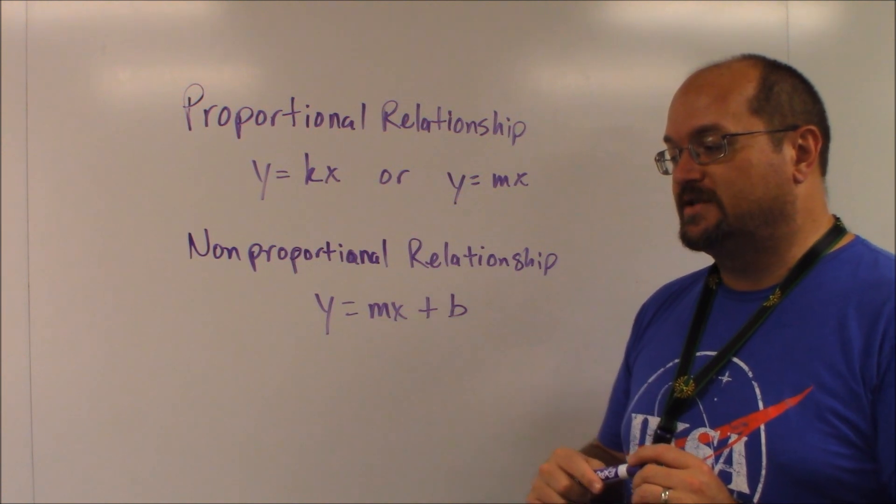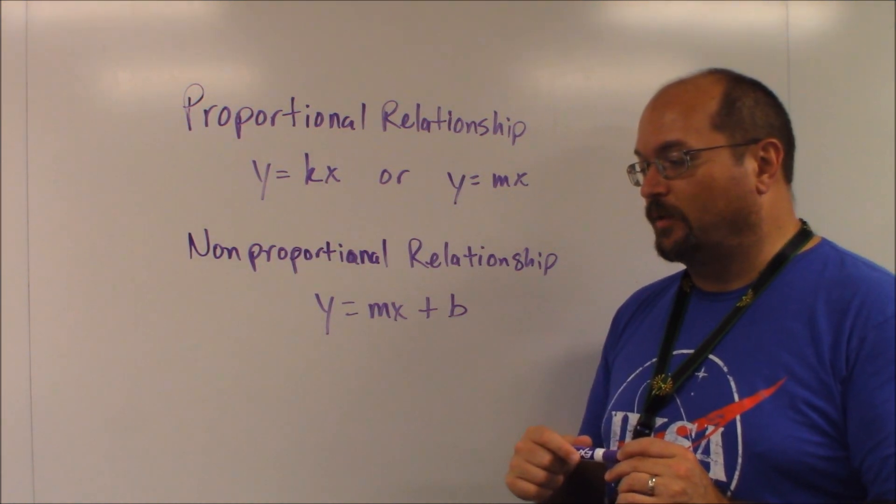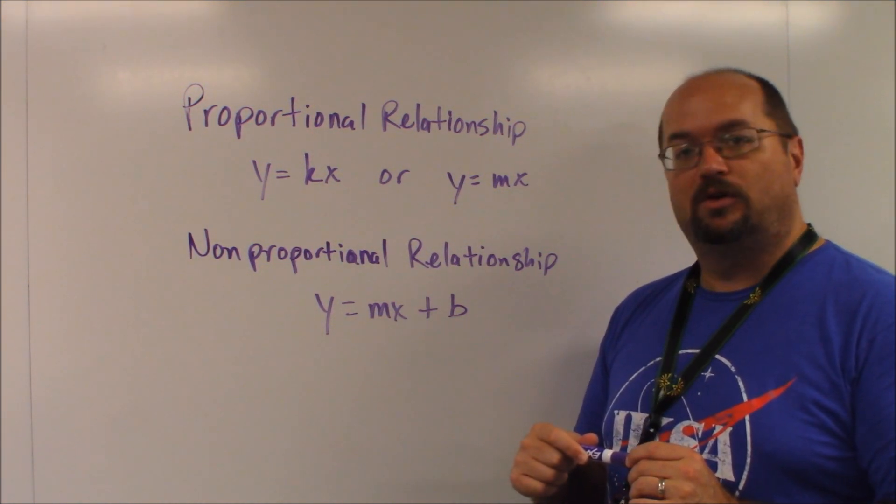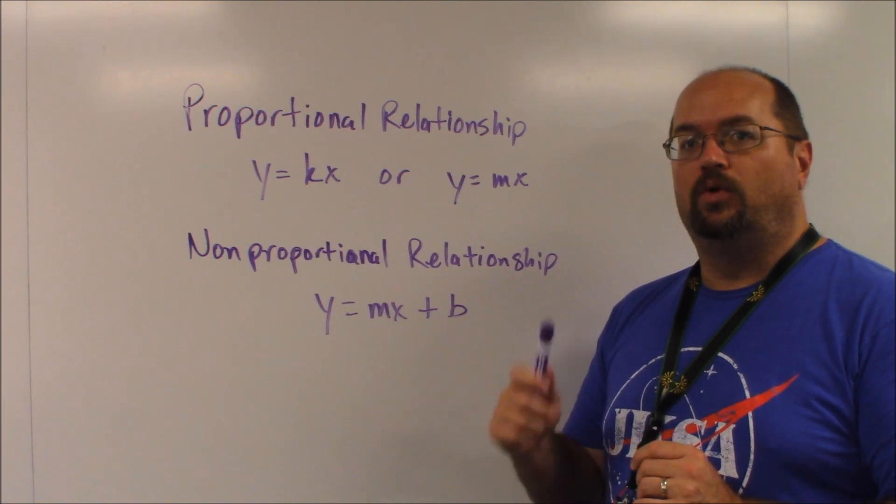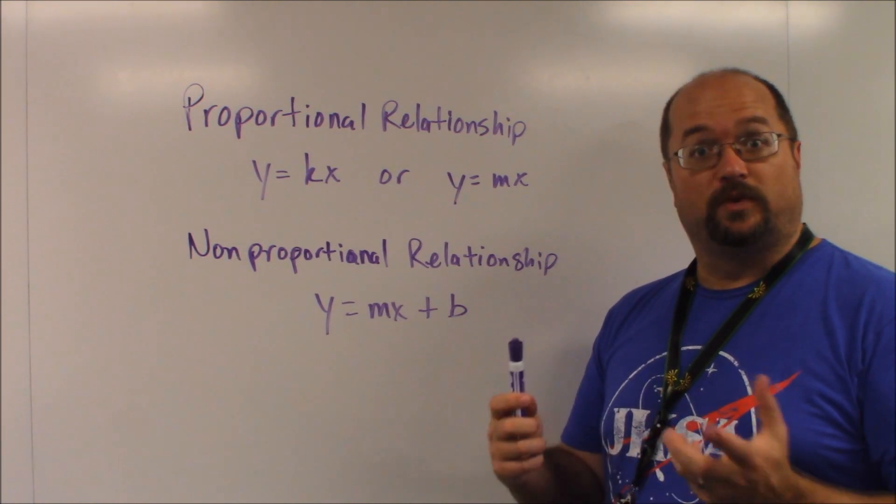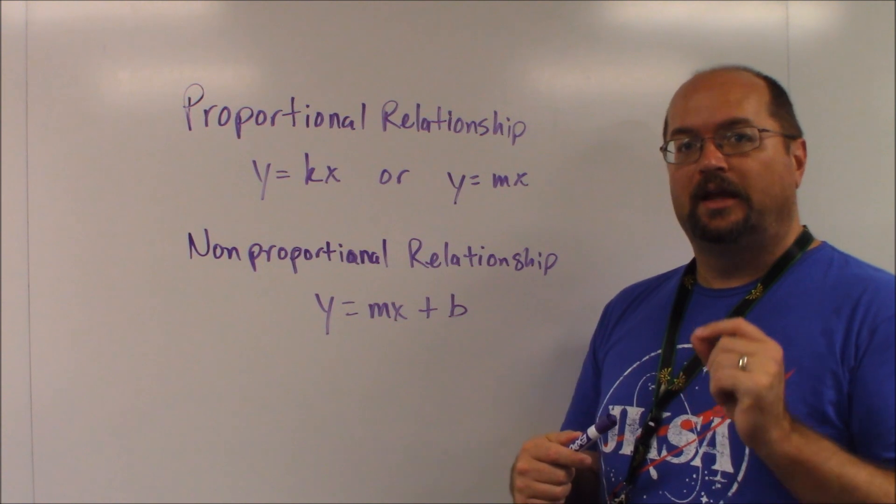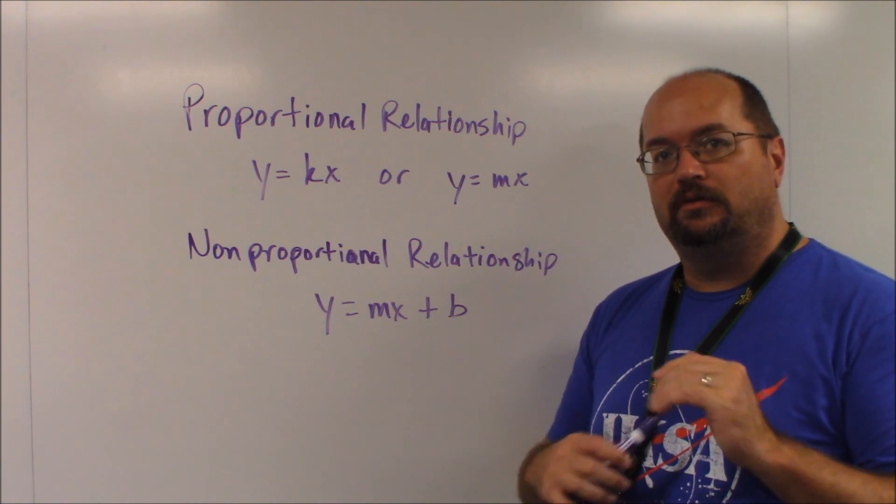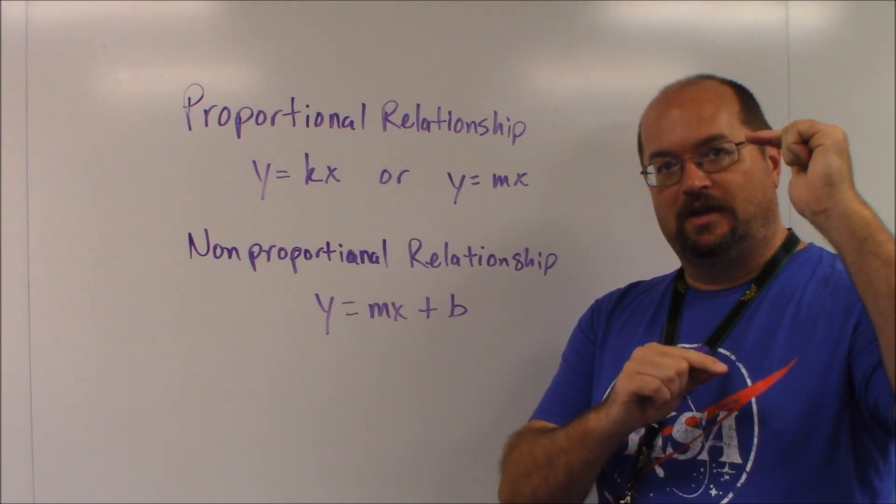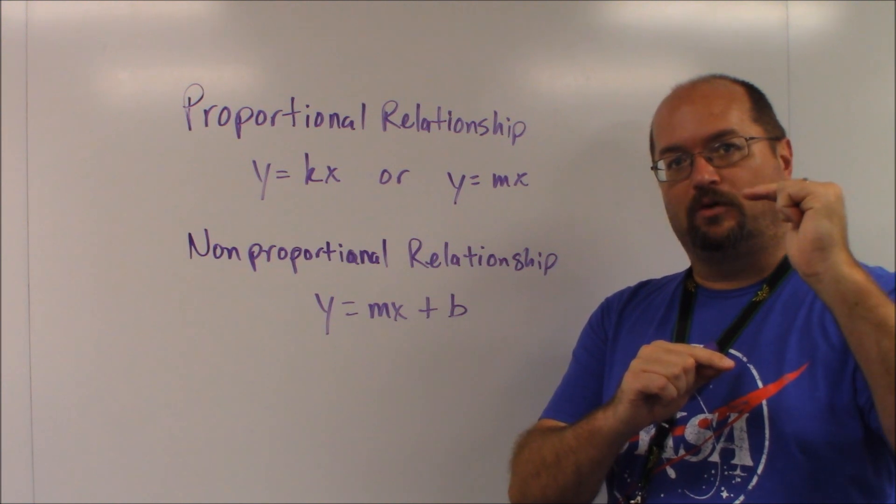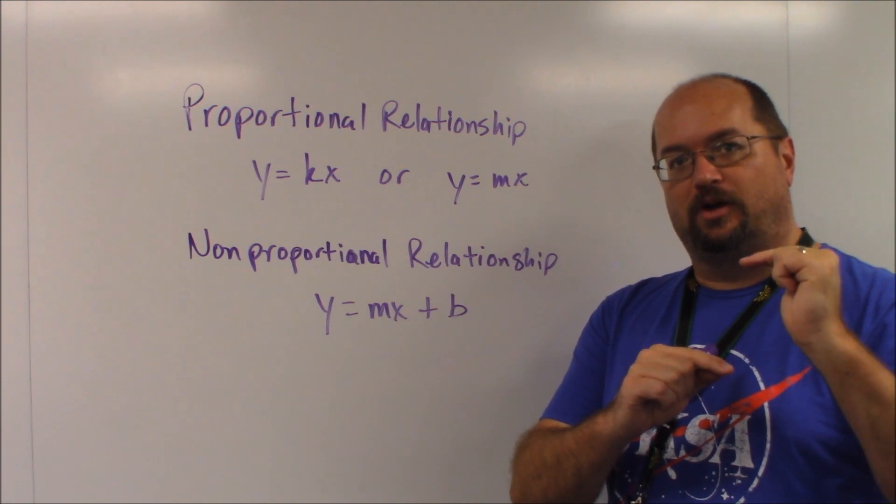So now let's look at answer choice D, a nine inch candle burns at a rate of one inch per hour. Well, that's one inch per hour, right? But wait, the candle itself starting at nine inches and then shrinking one inch per hour.